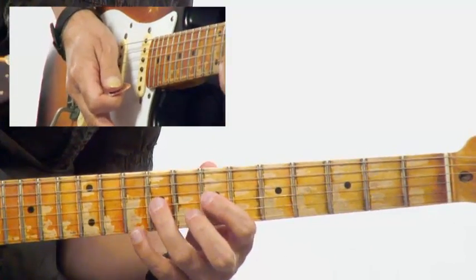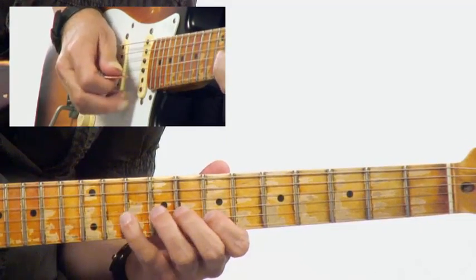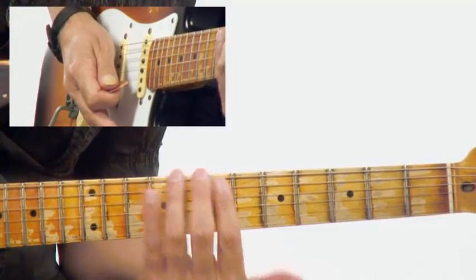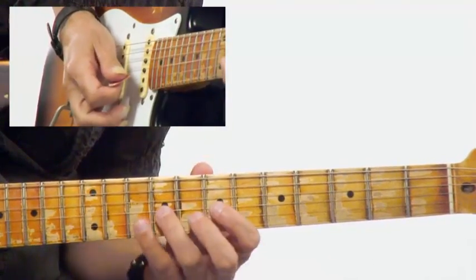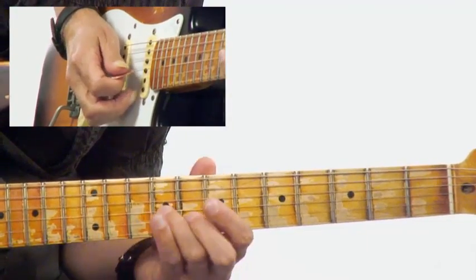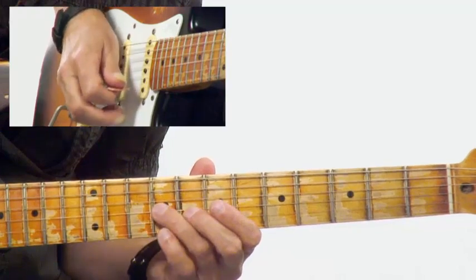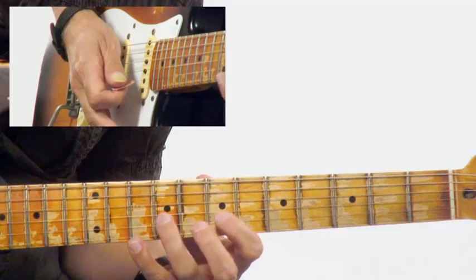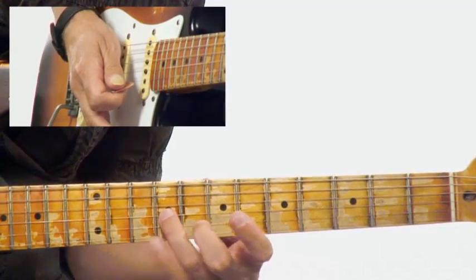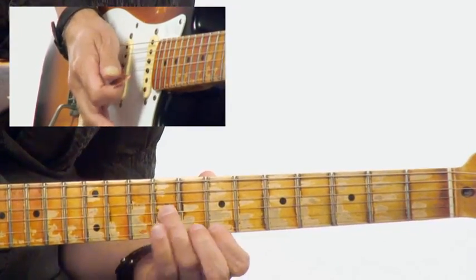Then I do an intervallic line from this pattern. Some people would call that the Aeolian shape, but I'm playing a pedal tone idea, starting with the E. So I'm pedaling from the E, the D, the C#, and the B.